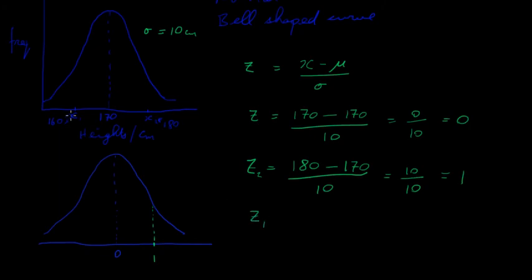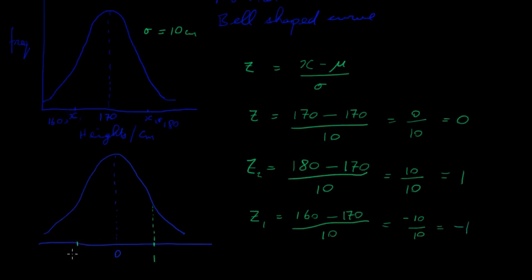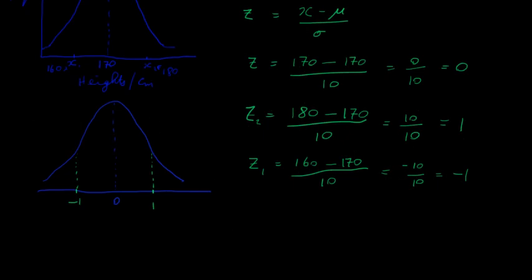Now z1, relating to x1 = 160 centimeters: z = (160 − 170) / 10 = −10/10 = −1. So 160 centimeters is 1 standard deviation below the mean, or −1 in z value terms. To summarize: the mean 170 cm → z = 0; x2 = 180 cm → z = +1; x1 = 160 cm → z = −1.